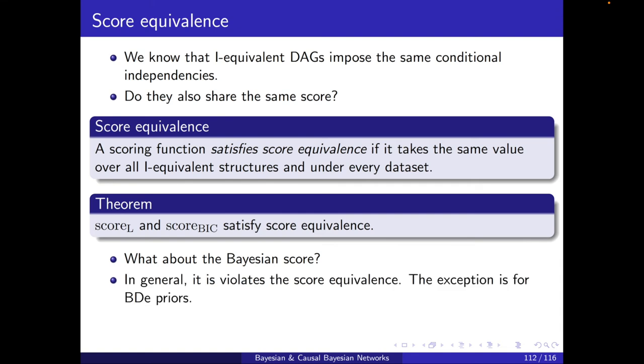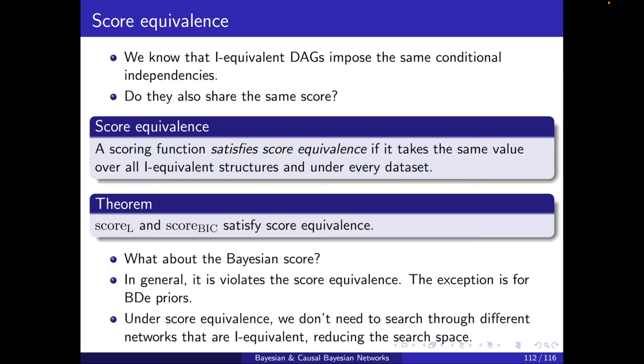What about the Bayesian score? In general, it violates the score equivalence. The exception is when we have BDE priors. We didn't cover that in this course, but you can look it up if you are interested. Under score equivalence, we don't need to search through different networks that are I-equivalent. And this means that we can reduce the search space. So if one of my neighbors is I-equivalent to the current state, I don't need to search or I don't need to calculate that neighbor.